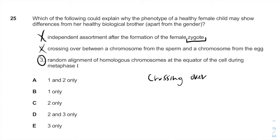This is our answer, because like I said previously, the changes occur during spermatogenesis and oogenesis, and the random alignment of homologous chromosomes at the equator of the cell during metaphase 1 can occur during these processes. So, E is our answer.